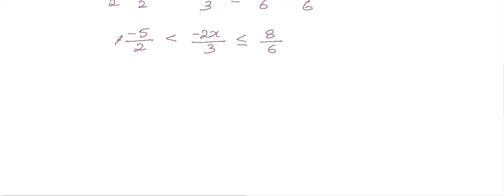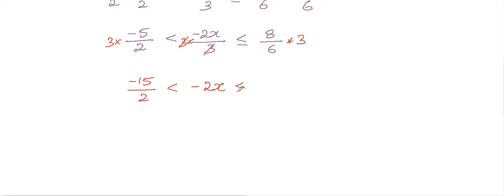We need to cancel the three in the denominator of the middle term, so multiply all three sides by three. We get minus fifteen over two on the left, the threes cancel in the middle leaving minus two X, and on the right eight times three is twenty-four, so twenty-four over six. Simplifying: minus fifteen over two, less than minus two X, less than or equal to four.